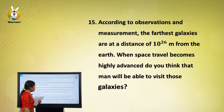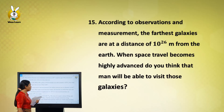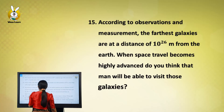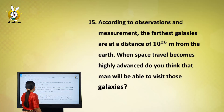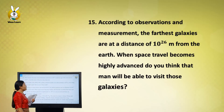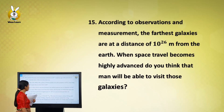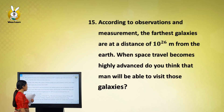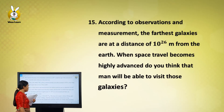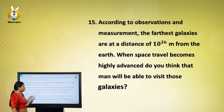The nearest star is at a distance of approximately 10^26 meters from the Earth. The nearest star is at a distance of 10^26 meters from the Earth.